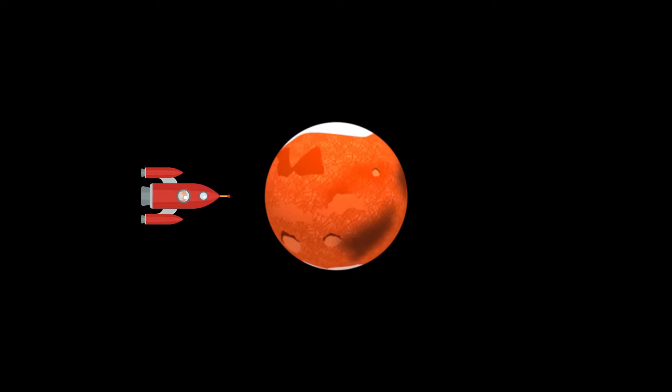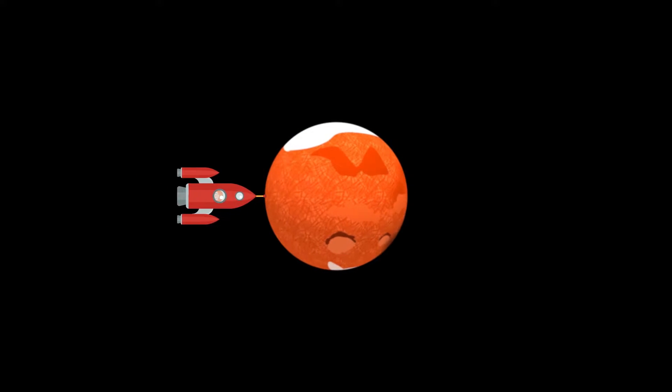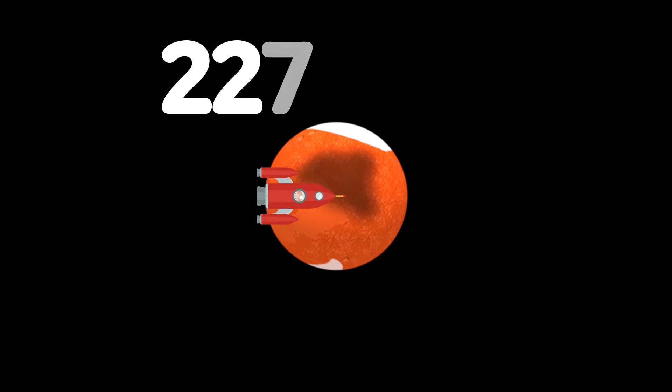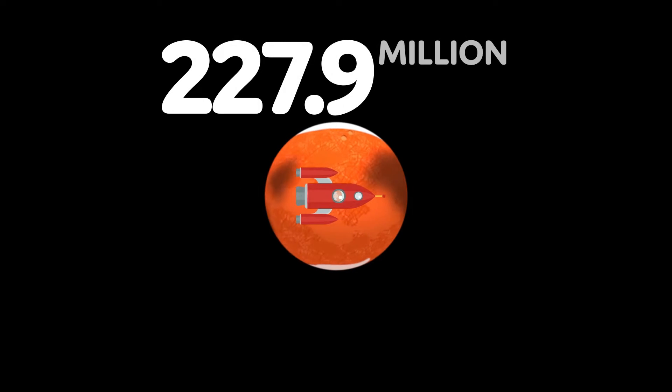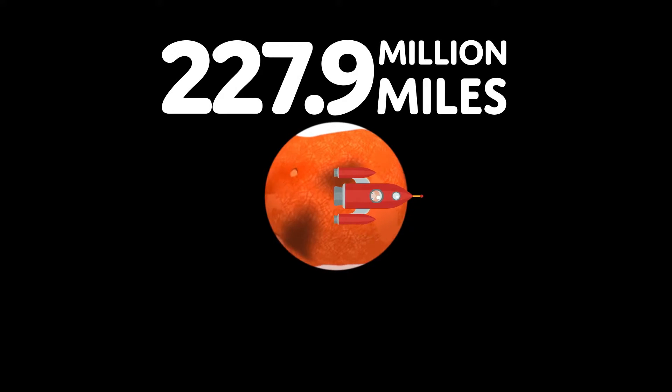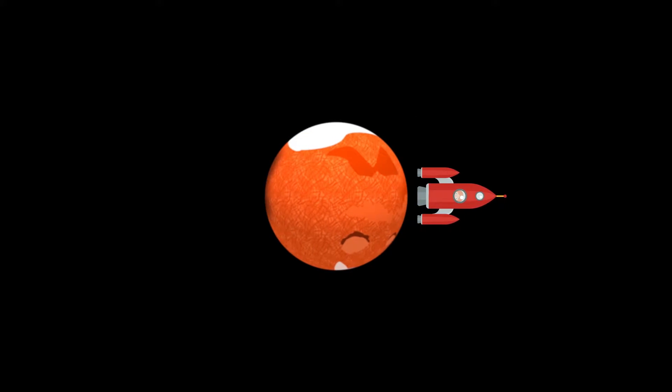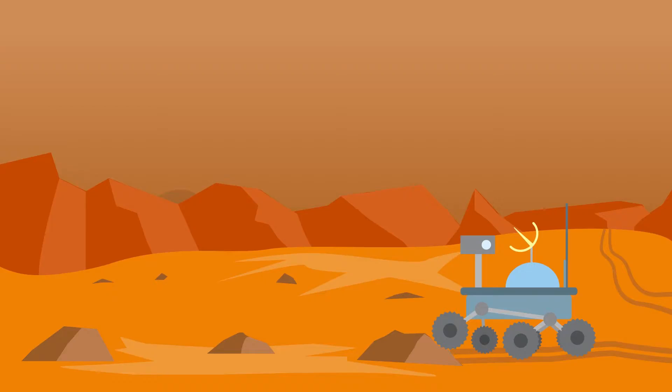The fourth planet is Mars. It is 227.9 million miles from the sun. Mars has north and south polar ice caps like Earth. There are dust storms on Mars that are the largest in the solar system.